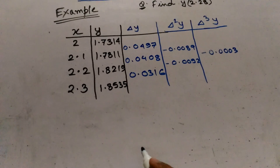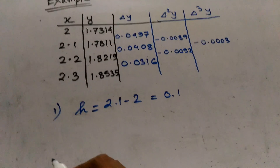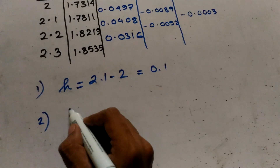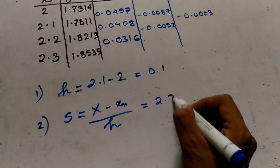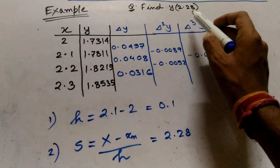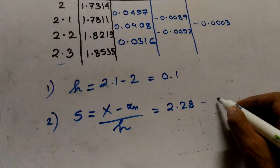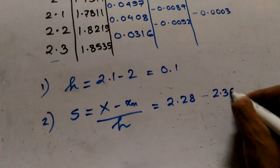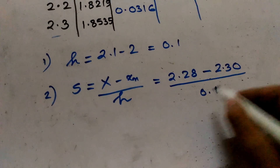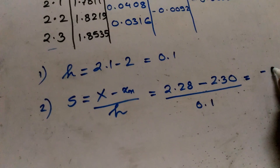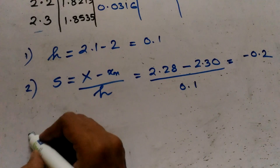Now we will proceed with the solution. First, we calculate H: H = 2.1 − 2.0 = 0.1. Second, we calculate S: S = (x − xₙ) / h = (2.28 − 2.30) / 0.1 = −0.2 / 0.1 = −0.2.